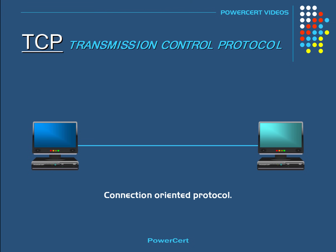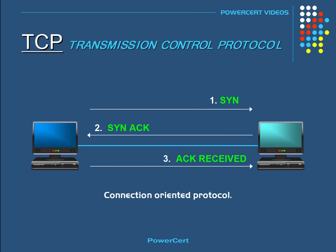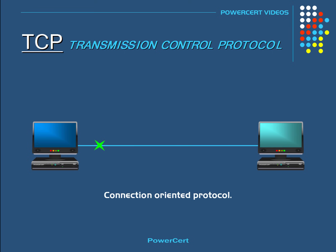It does this by using a three-way handshake. The first step is that a computer will send a message called a SYN (S-Y-N). Then the receiving computer will send back an acknowledgement message telling the sender that it has received the message. And then finally the sender computer sends another acknowledgement message back to the receiver. Once this has taken place, data can be delivered.